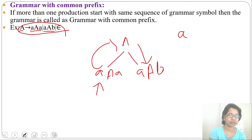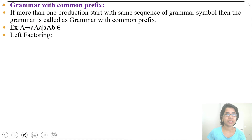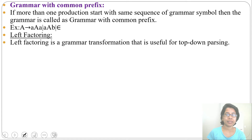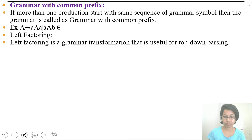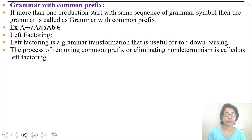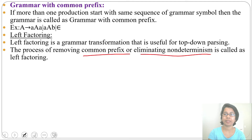The process of removing common prefixes is called left factoring. Left factoring is a grammar transformation useful for top-down parsing. For top-down parsing, grammar should be free from ambiguity, left recursion, and common prefixes. Left factoring is one way of transforming a grammar with common prefixes to a grammar without common prefixes, thereby eliminating non-determinism.